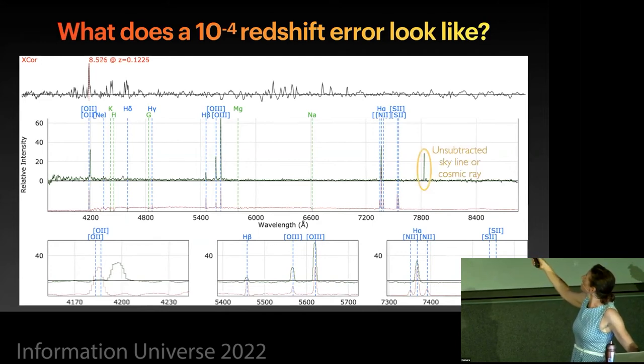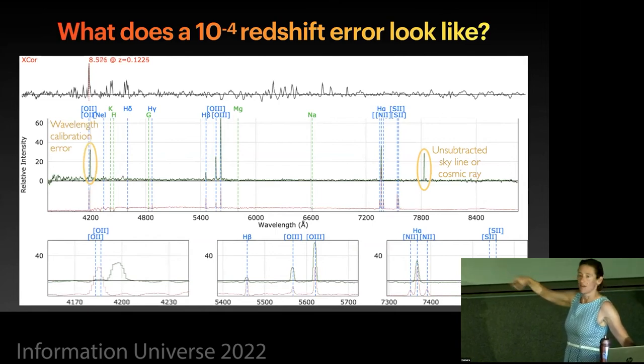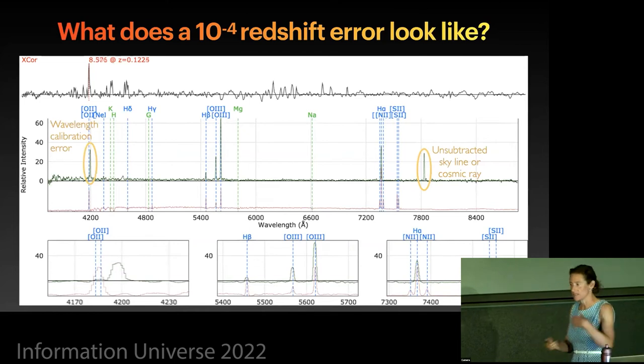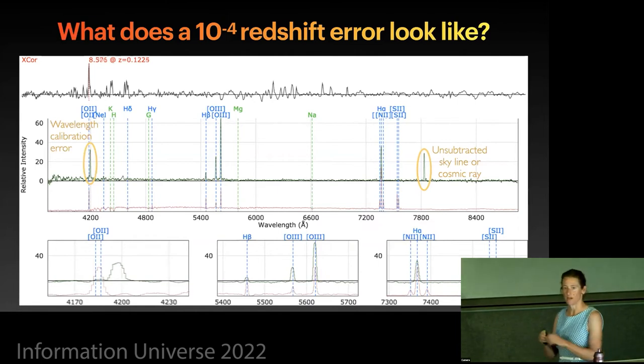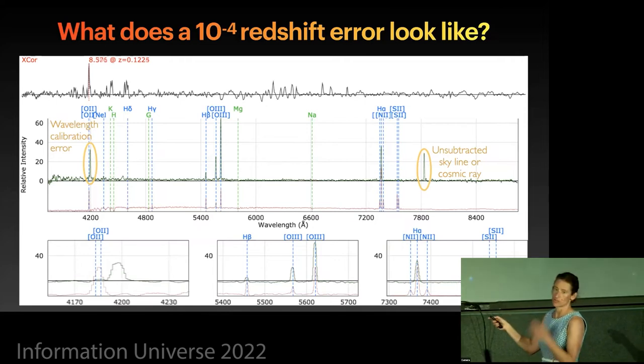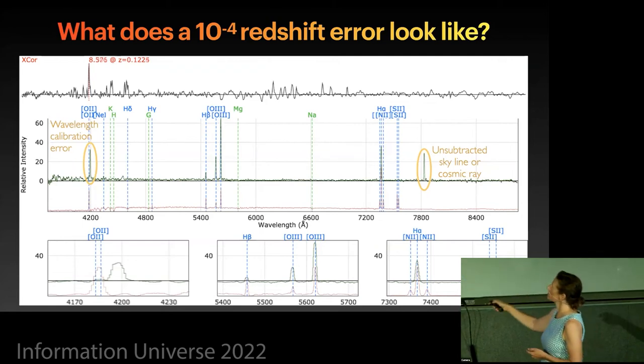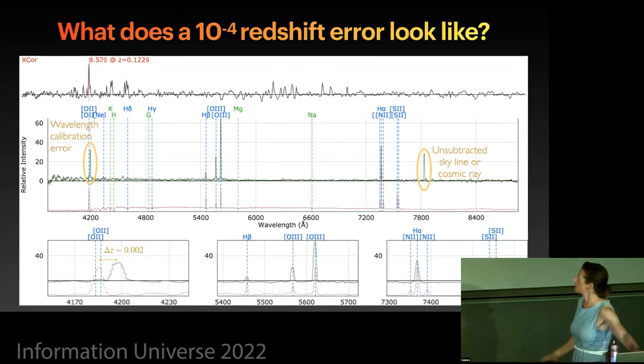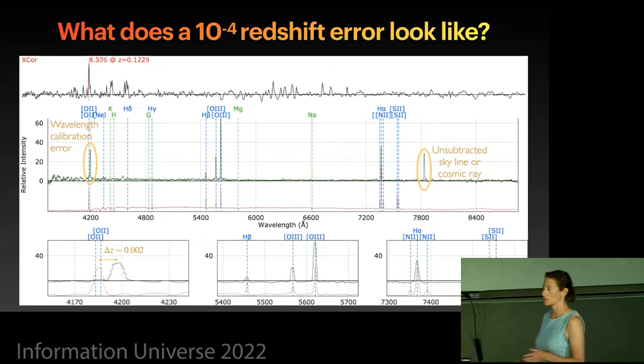You notice a couple of interesting things in this spectrum. I chose it specifically. This has an unsubstracted skyline or cosmic ray over here. And it also has a wavelength calibration error in this here. This is unusual, but it does happen not that rarely. And I've also been looking at DESI spectra and stuff like that. This does happen where one side of the spectrograph doesn't actually match the redshift of the other side of the spectrograph. There's some like differential calibration errors. And so you, if you make your, if you choose this as the line that you choose to line up to make your redshift, or you choose this, you'll get, or you choose H alpha, for example, then you end up with a shift that's 10 to the minus 3. So 2 by 10 to the minus 3 in this particular case. And so that's, that's a kind of calibration error that can happen in the spectrum.